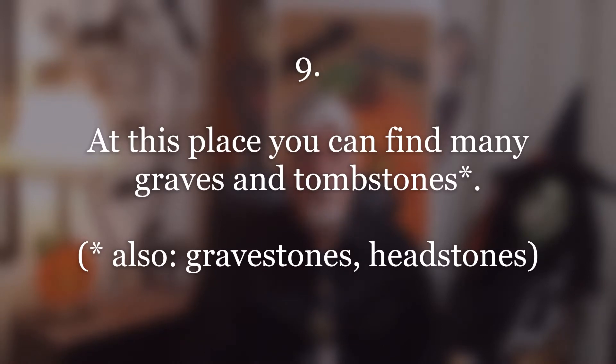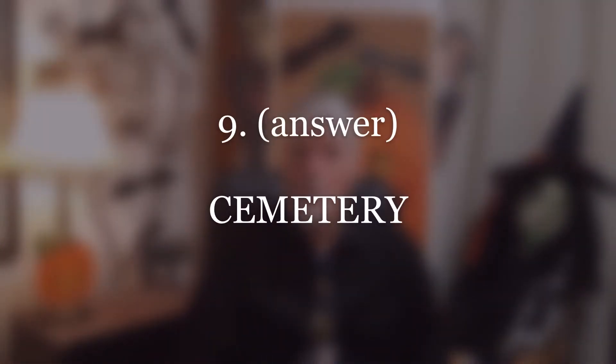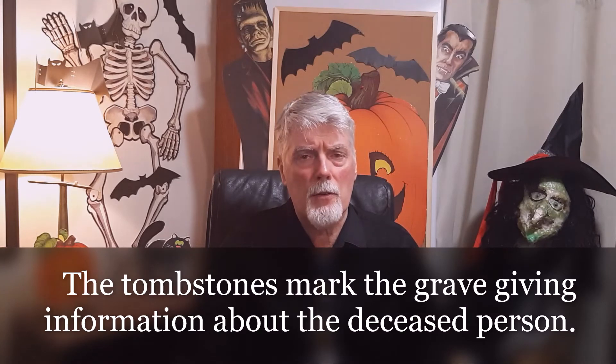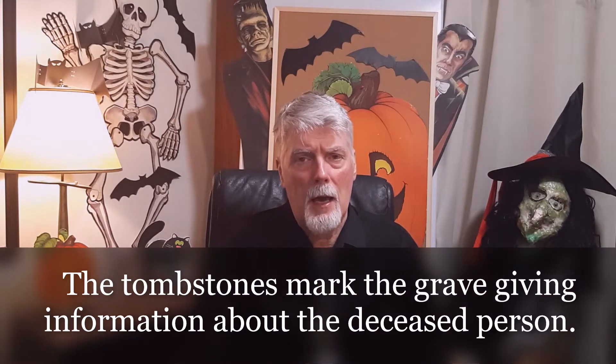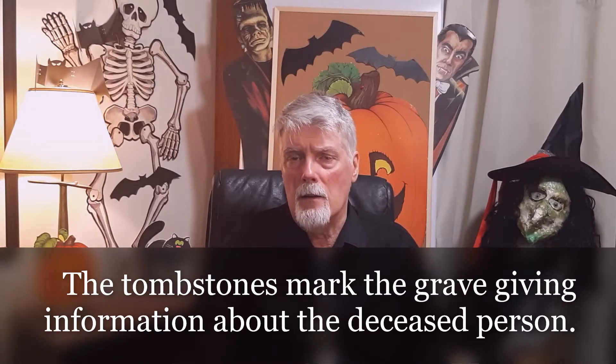Number nine. At this place, you can find many graves and tombstones. And the answer? Cemetery. The graves are the holes where they put the casket — the box with the dead body inside. And the tombstones are the structures that mark the grave; they have the person's name and the days they were born and died. These tombstones are usually made out of granite or cement.